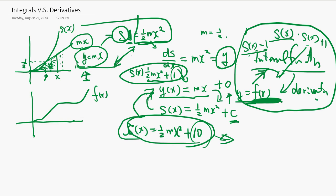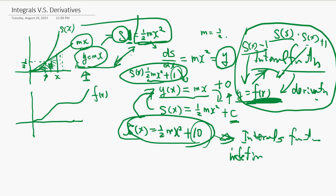So when we call integral, it's not just one function. S(x) plus one also becomes y when you take a derivative; S(x) minus one also becomes this when you take a derivative. So when you call integral, it's not a one-to-one correspondence — there are many integrals, many choices. We don't know which constant, so we call it indefinite. We know what integral is: the integral function is the one that, when you take its derivative, you get the original function.